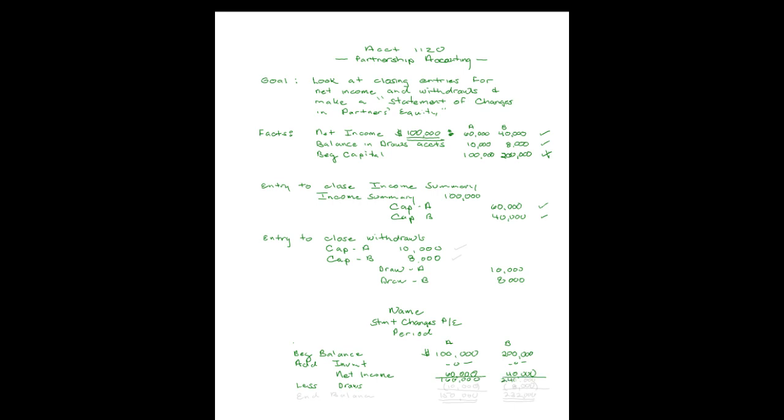Partner A had sixty thousand dollars of net income, so we add that in. This means right now there's a hundred and sixty thousand in the capital account for A, and two hundred and forty thousand in the capital account for B.